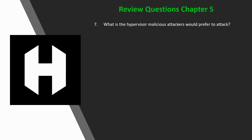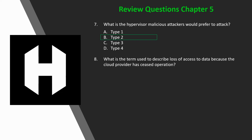Question 7: Which hypervisor would malicious attackers prefer to attack — Type 1, Type 2, Type 3, or Type 4? The answer is B, Type 2, because attackers prefer Type 2 hypervisors since the operating system offers more attack surface and potential vulnerabilities. There are no such things as Type 3 or Type 4 hypervisors.